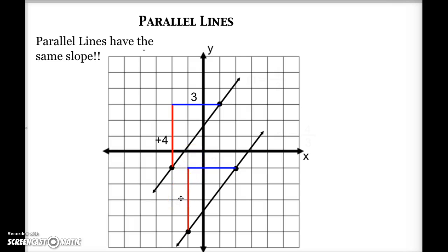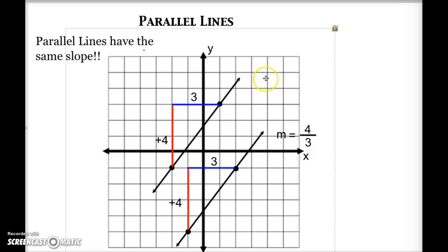The other line also has a rise of positive 4 and a run of positive 3. The slope for the bottom line is the ratio of rise to run, which is 4 divided by 3. The slope for the top line is also positive 4 divided by 3. Notice that both lines have a slope of 4 thirds.